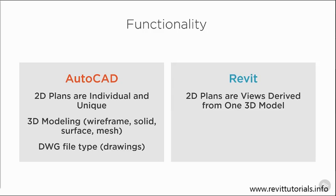When it comes to Revit, all of our 2D plans and views are derived from one 3D model. That brings about the concept of change management. Unlike in AutoCAD, where if a change happens I have to go back and change each individual drawing, in Revit, if I make a change in any view, that change will automatically be reflected throughout the rest of my views.